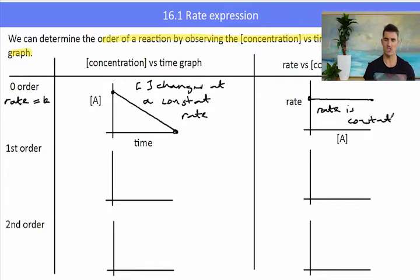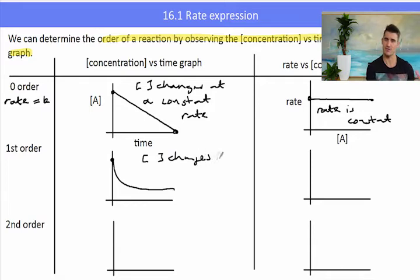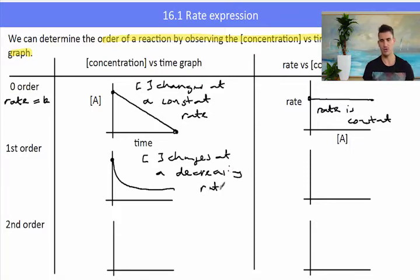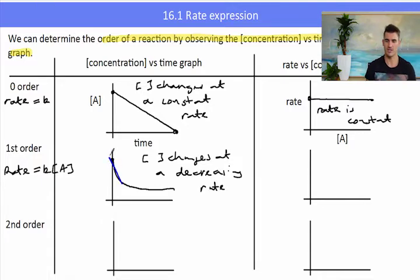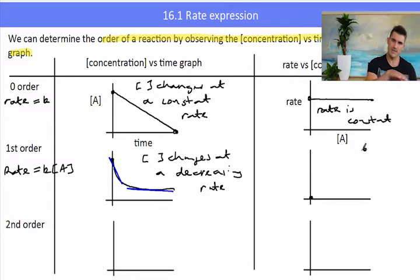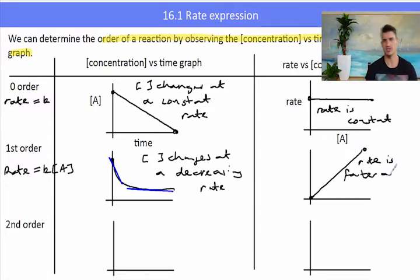A first order reaction has a concentration that changes over time. It starts off very quickly, and then as the concentration decreases, the rate starts to decrease. If we draw a few tangents onto the graph, we can see that at the start of the reaction the rate is very fast, and as we progress the reaction rate decreases — typical of a first order reaction. On the rate versus concentration graph, it is a linear line showing that at lower concentrations there is a lower rate and at higher concentrations there is a much higher rate.